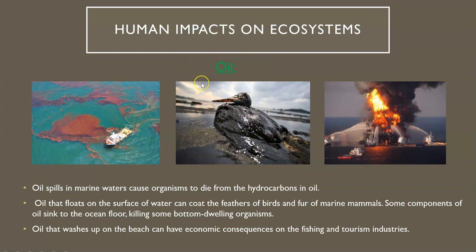The next thing we're going to talk about is oil. Humans have quite a deep love of oil, and that's caused quite a bit of damage to our planet. Oil spills cause organisms to die from the hydrocarbons in the oil. The oil that floats on the surface of the water can coat different animals' feathers and fur and make it hard for them to swim or survive. Some components of that oil can even sink to the floor of the ocean and kill organisms that live on the bottom — really from the surface to the seafloor, it's very destructive.